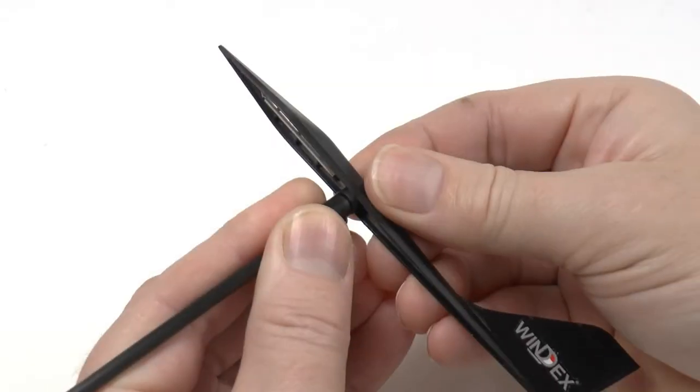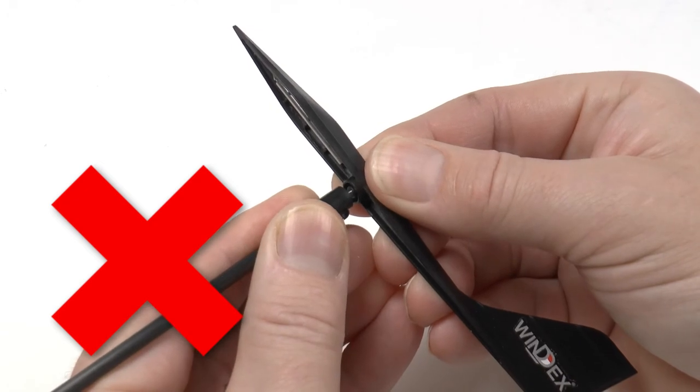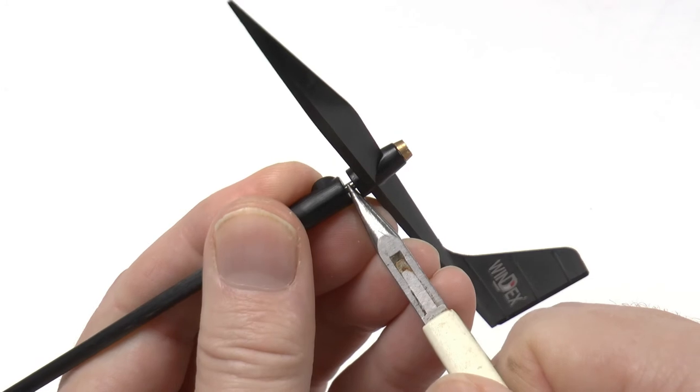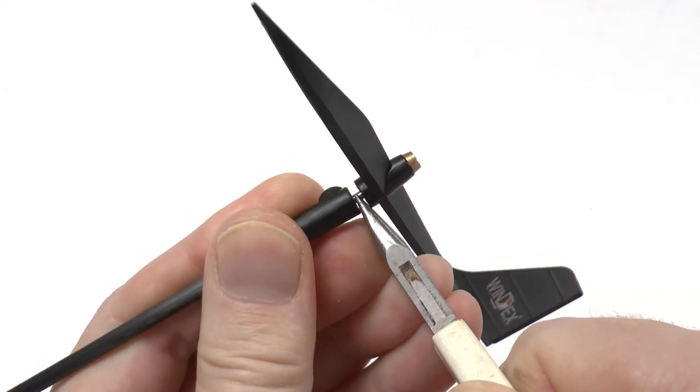If you need to remove the vane from the shaft, do not try to pull it out holding the vane. Instead use pliers holding the fixing pin and then pull it out.